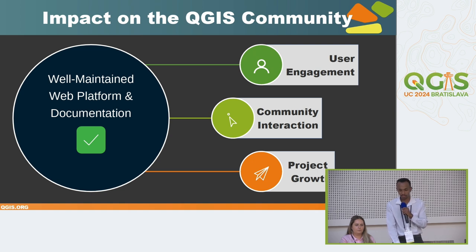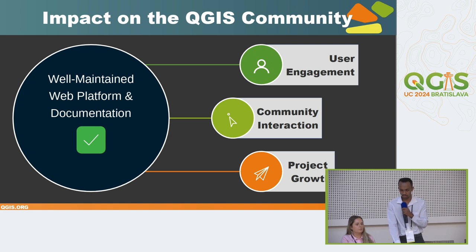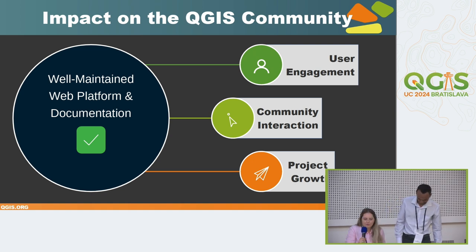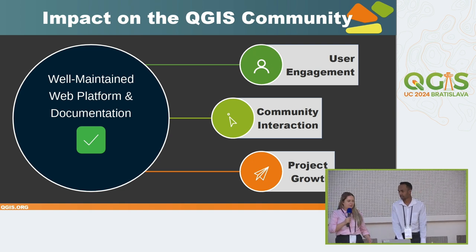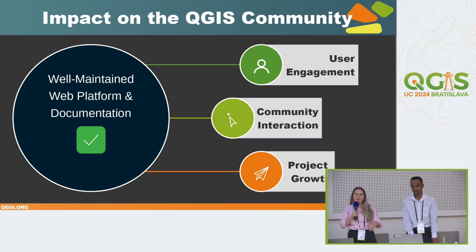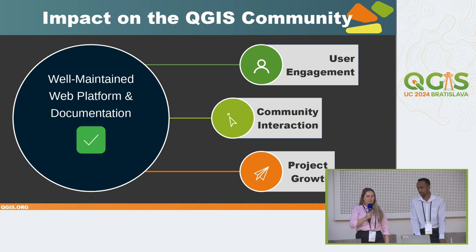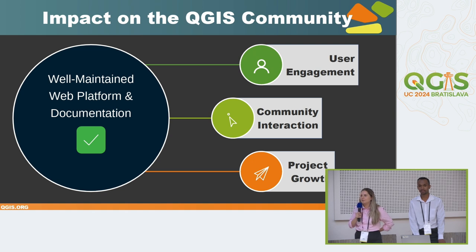Let's look at the broader impact that a well-maintained web platform and documentation has on the QGIS community. First, user engagement increases when each website is well-maintained and easy to navigate. Second is community interaction — from my personal experience, when you have good interaction inside the community, everything goes faster and better. I believe these two roles could benefit that community interaction. And of course, the project grows: if we need two full-time roles, that means the project is growing and will grow in the future. We hope our two roles will be a great benefit for the QGIS project.